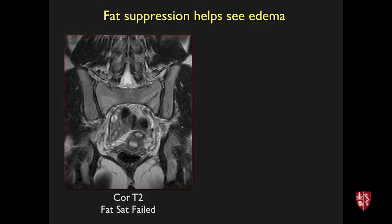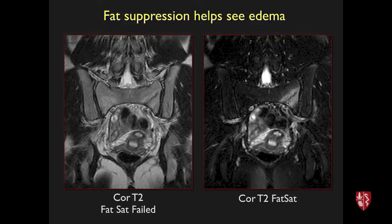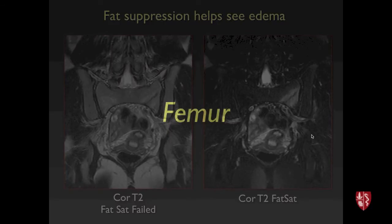Fat suppression is critical. Here's one where fat suppression failed or wasn't turned on. You can see a low signal line, but you see it much better with fat suppression turned on, suppressing the normal marrow fat.